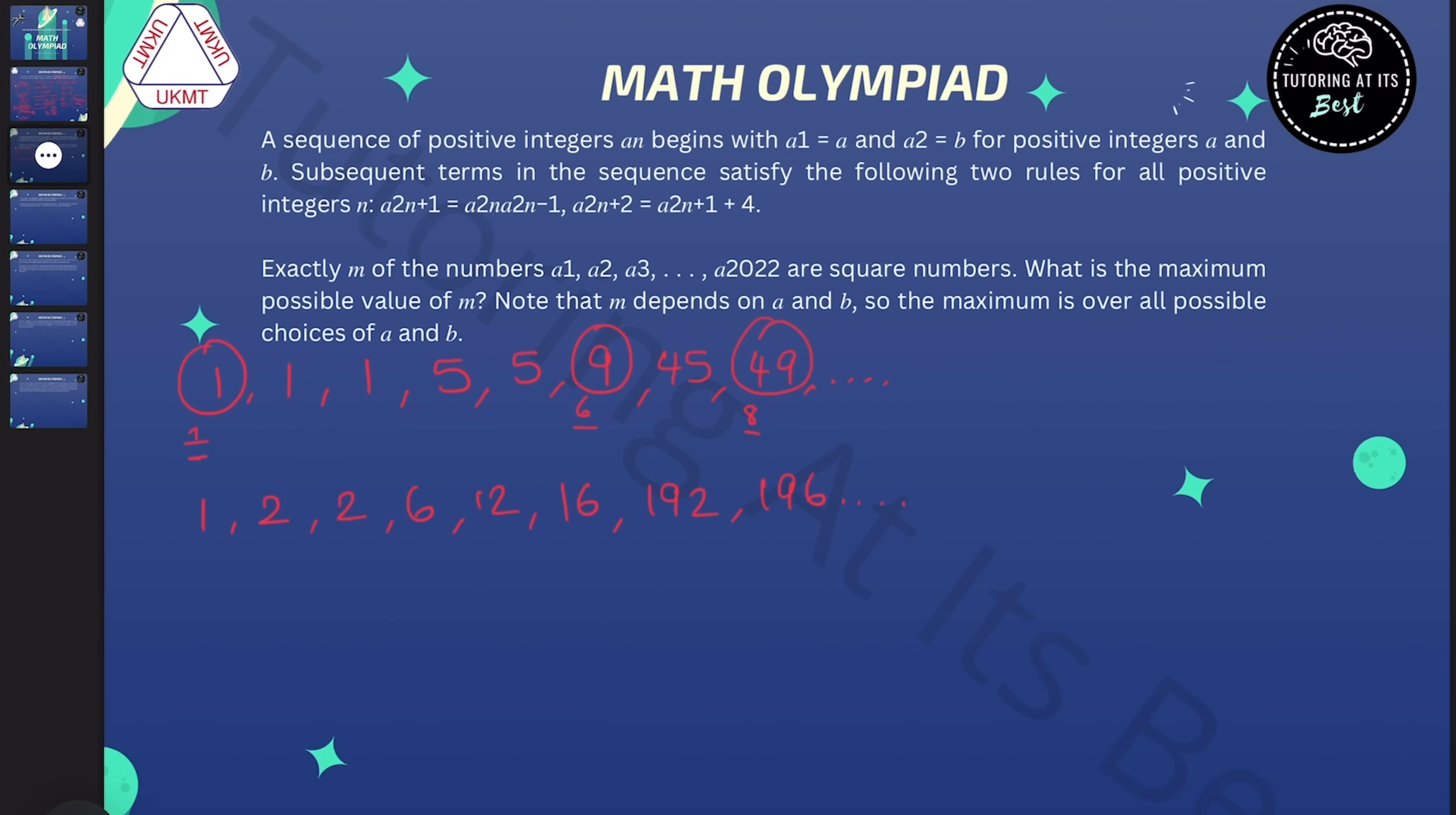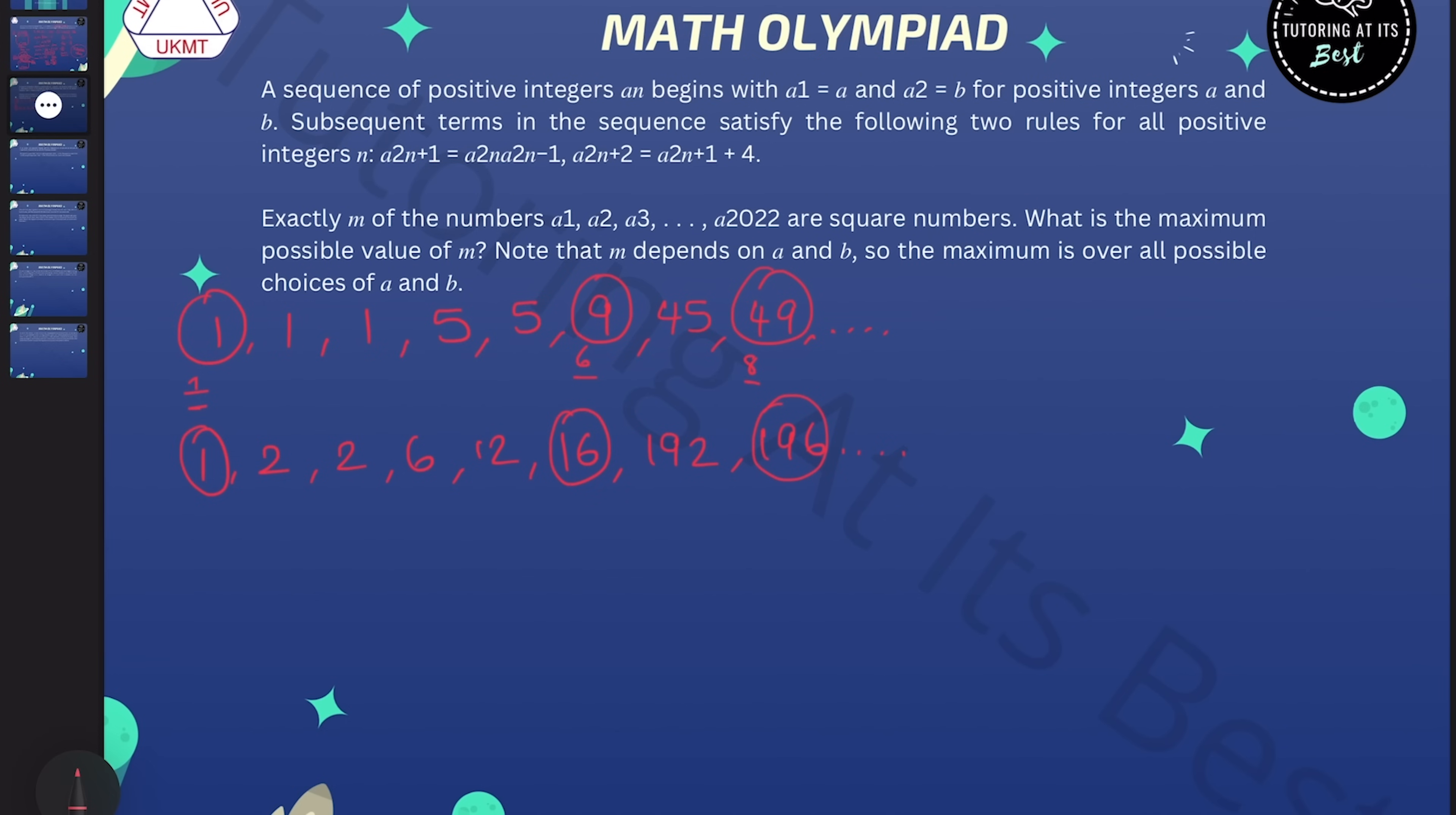And again, there are some squares. I've got one at the beginning, we've got 16, and then 196, which is 14 squared. So one thing we can notice is that in both cases, the sixth and the eighth terms are both squares. And it might be worth trying to prove that it always happens, and to prove that even numbers after that are squares. That will give us an indication as to what happens through the remaining parts of the sequence.